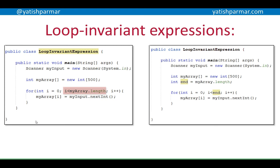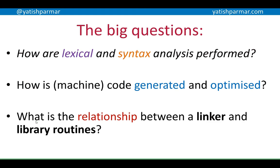The compiler will try to generate some form of optimization automatically, but that optimization is never a replacement for good algorithm design in the first place. The previous video covered lexical and syntax analysis; this video discussed how machine code is generated and optimized. Watch out for the final video in the series, which will explain the relationship between a linker and library routines.